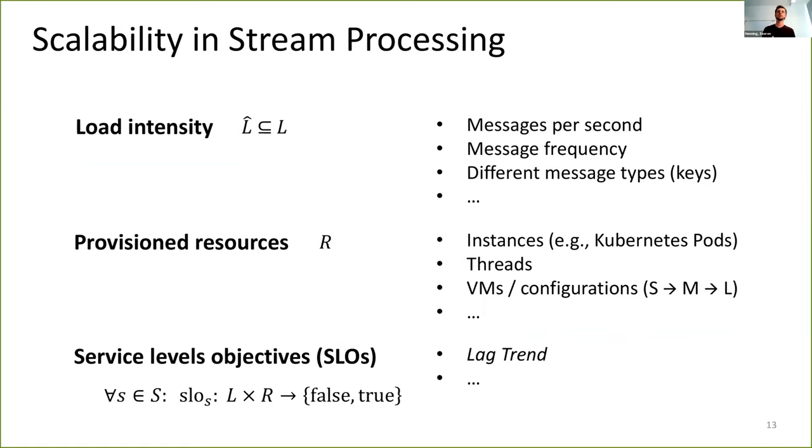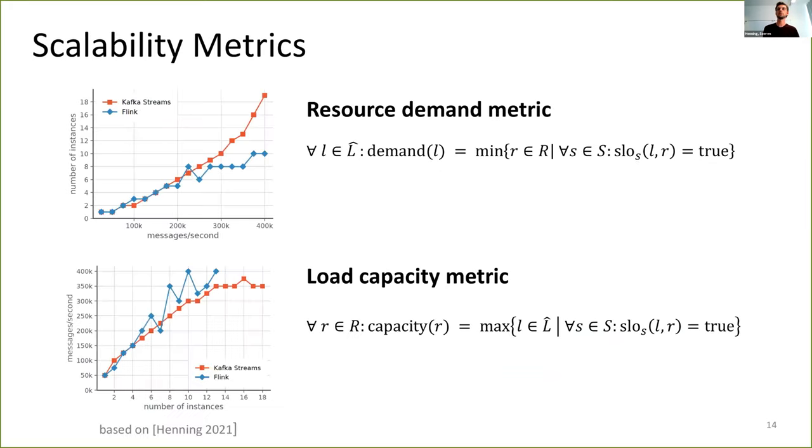Having now these definitions for load intensity, which we denote as L hat, for the provisioned resources and having the service level objectives, we could now define metrics. Our two metrics are the resource demand metric, which is a function mapping load intensities to the amount of resources which are required to handle that load. More formally, the amount of resources which is required such that all SLOs are fulfilled. On the other hand, our load capacity metric is a function mapping resources to the maximum load intensity that these resources are able to process.